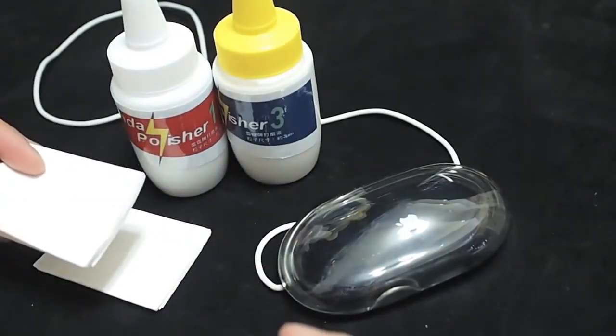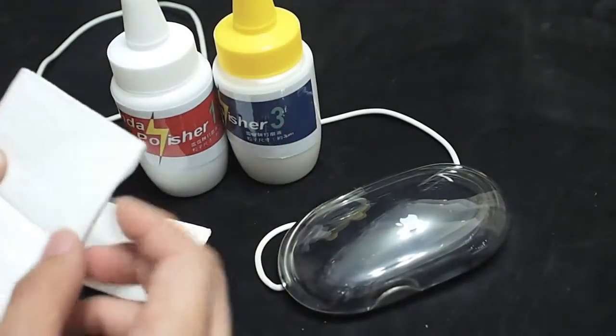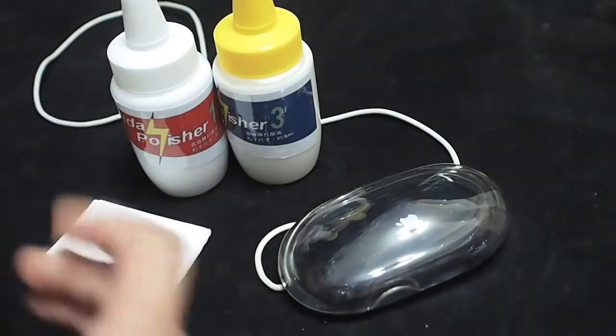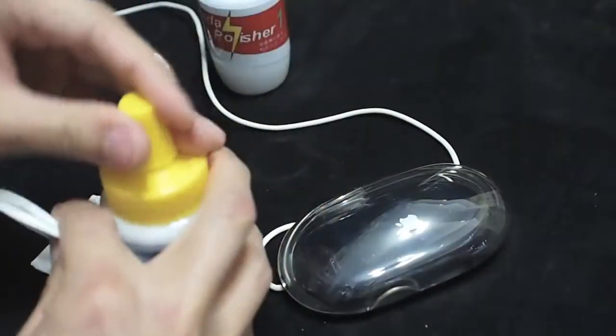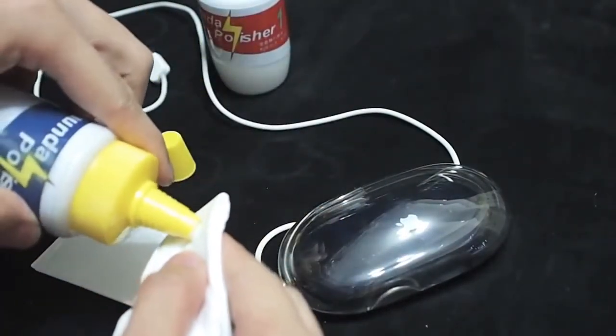First, we need a plastic polisher and tissue. First of all, we have to apply some plastic polisher onto the piece of tissue.